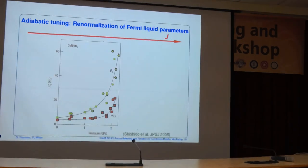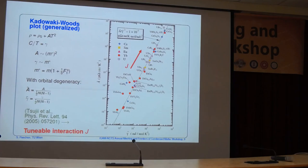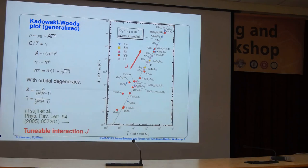Question from audience: On the last slide, you wrote m* proportional to m times (1 + F₁ˢ/3) — we don't have Galilean invariance, right? So where do you measure F₁ˢ? The speaker replies: That just comes from Fermi liquid theory, it's the symmetric spin-exchange Fermi liquid parameter. It works for helium-3 but doesn't really work here — you need Galilean invariance for that relationship, and there's no Galilean invariance. In fact, I think it has its origin in a mistake in Mott's book where he claims there is an effective Galilean invariance.